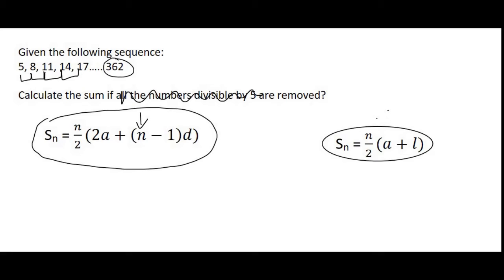So what I then do is I use the arithmetic term formula, which is the following, and we know that the last term has a value of 362. The first term is 5. The number of terms we don't know,